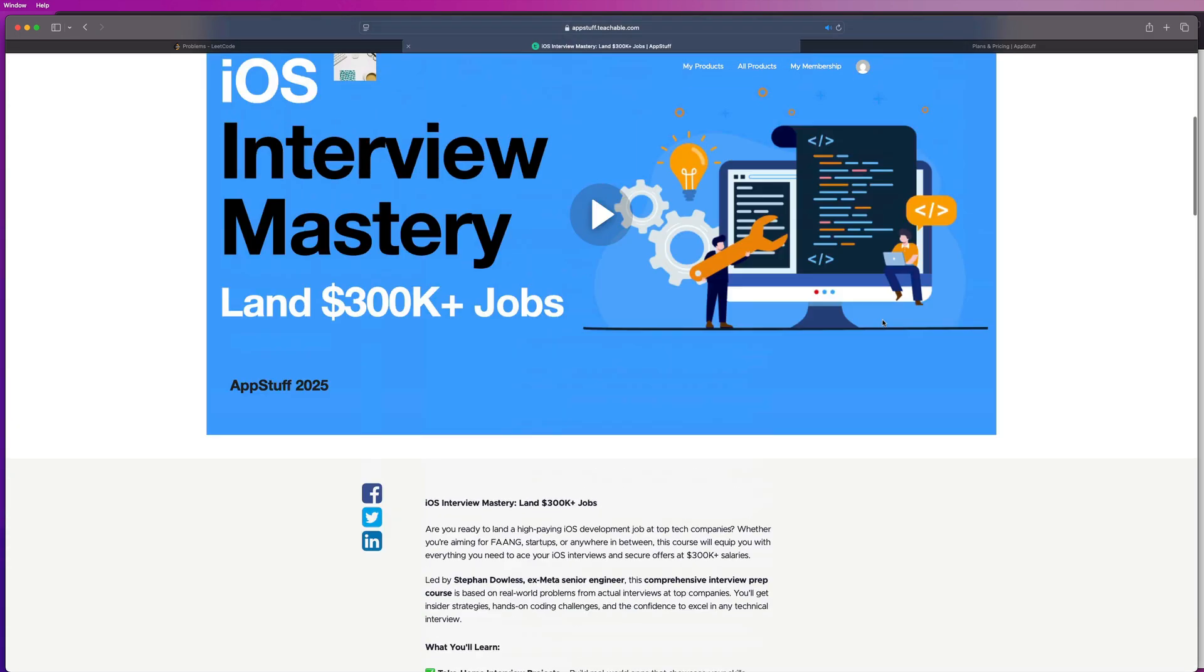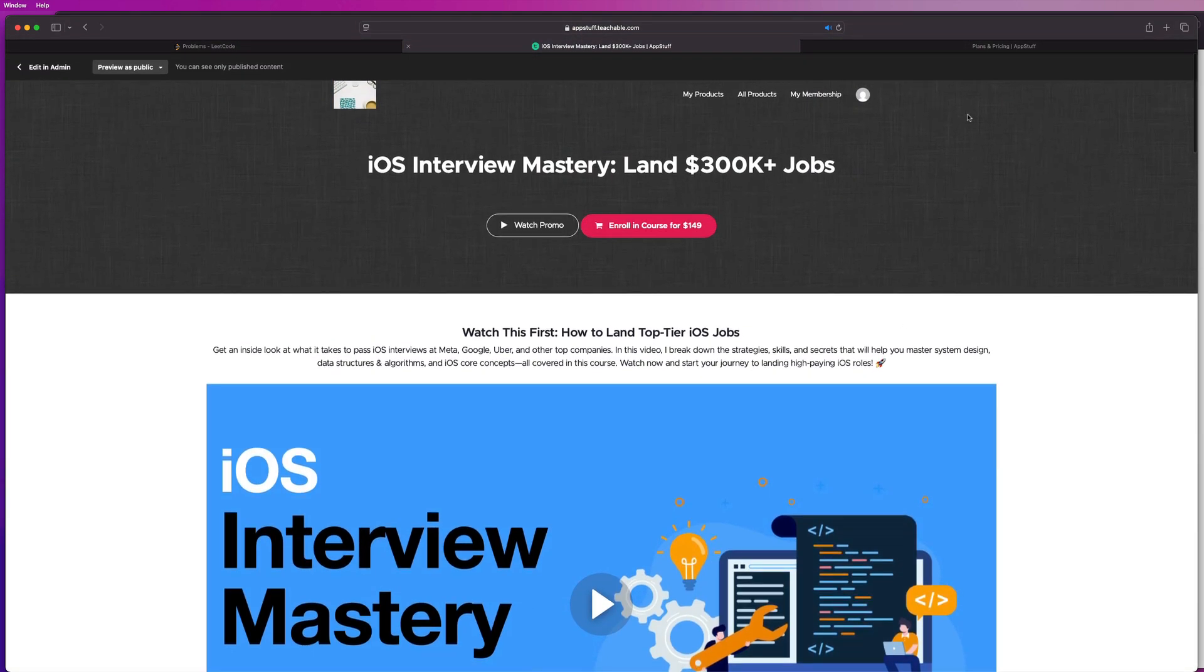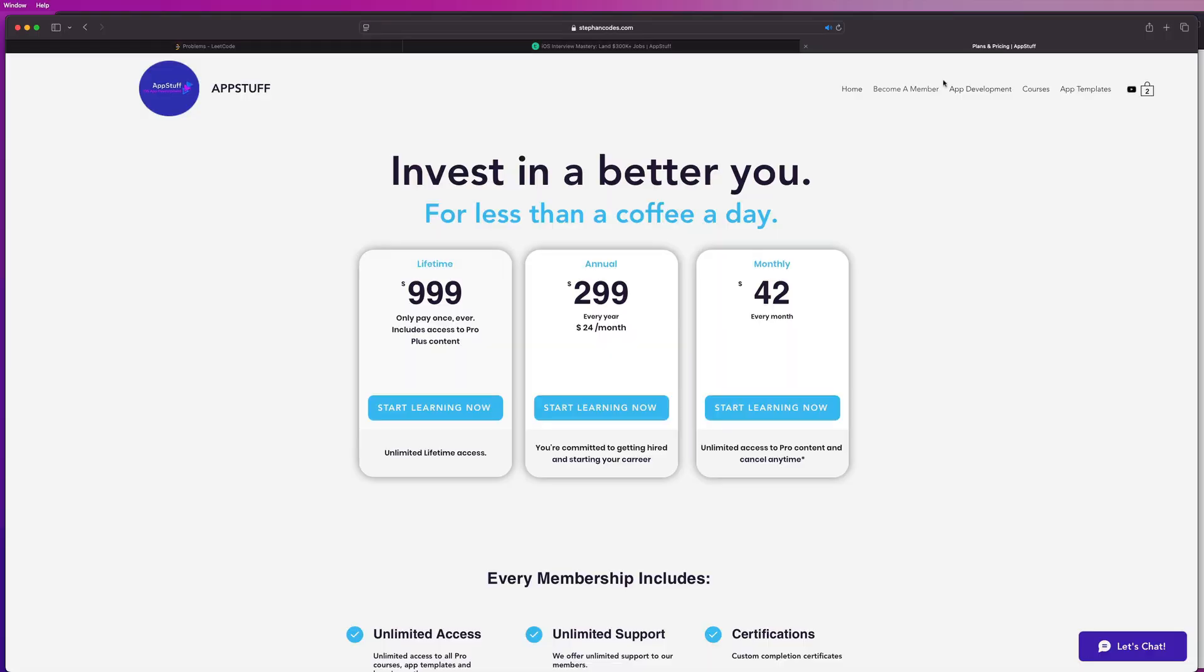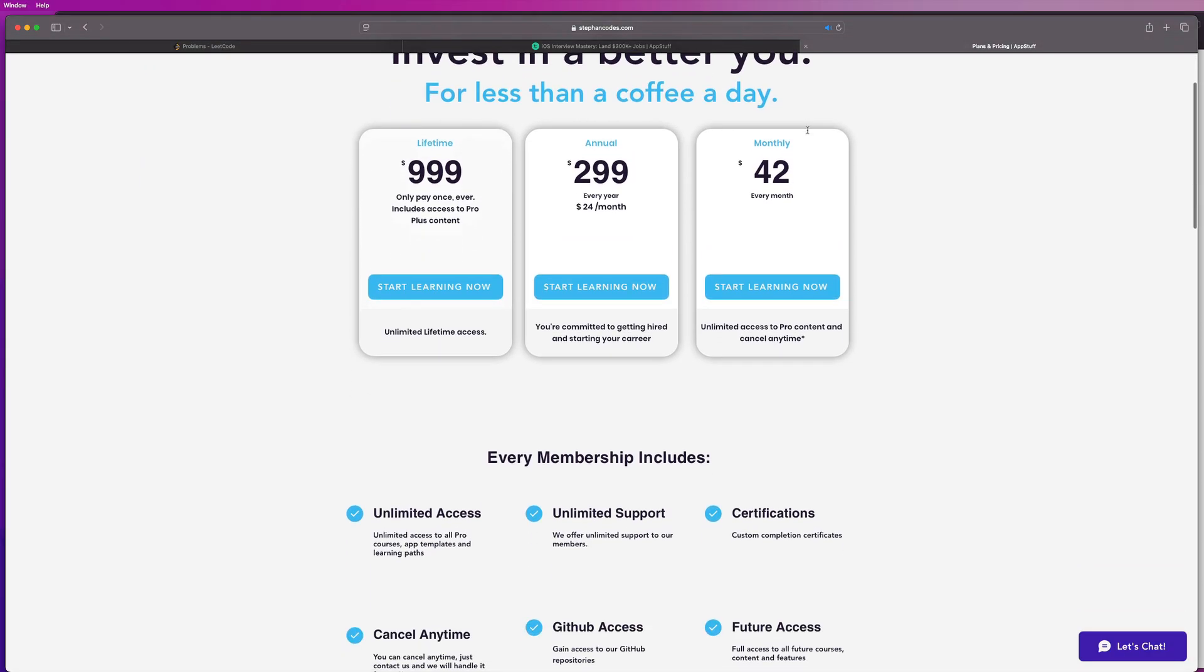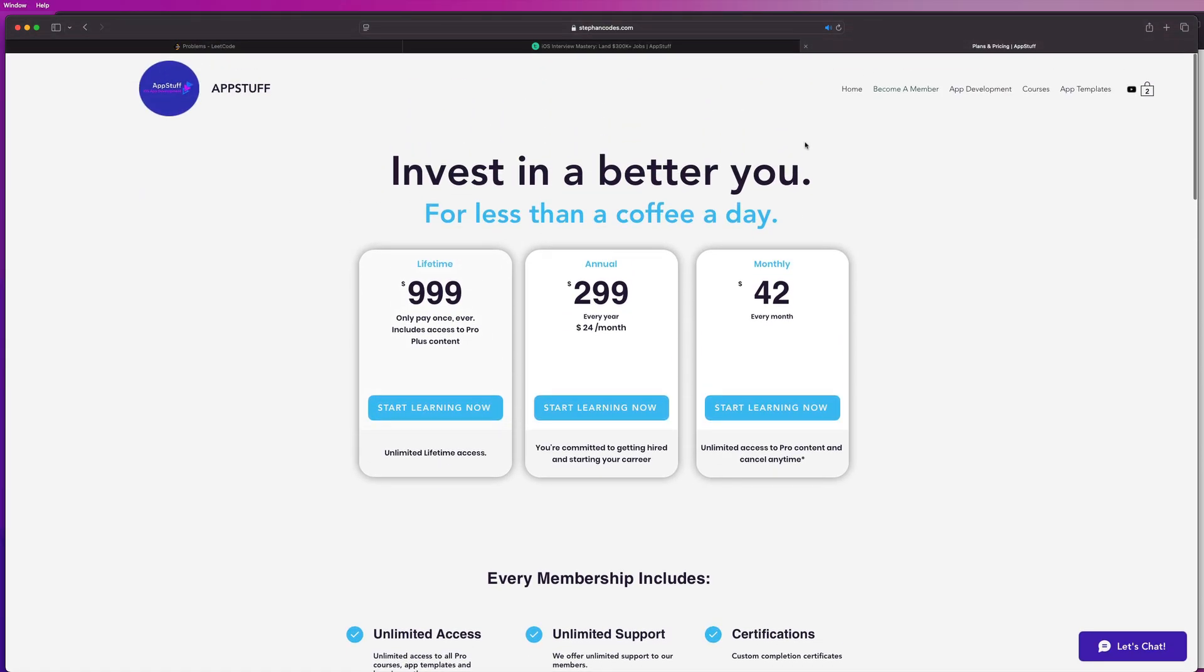And you can either purchase the course as a one-time purchase for $149, or you can become a member here with us and get free access to the course with the monthly or annual or lifetime memberships. So the link for all of this stuff is in the description. Let's go ahead and dive into the video now that's going to cover big O notation in data structures and algorithms.